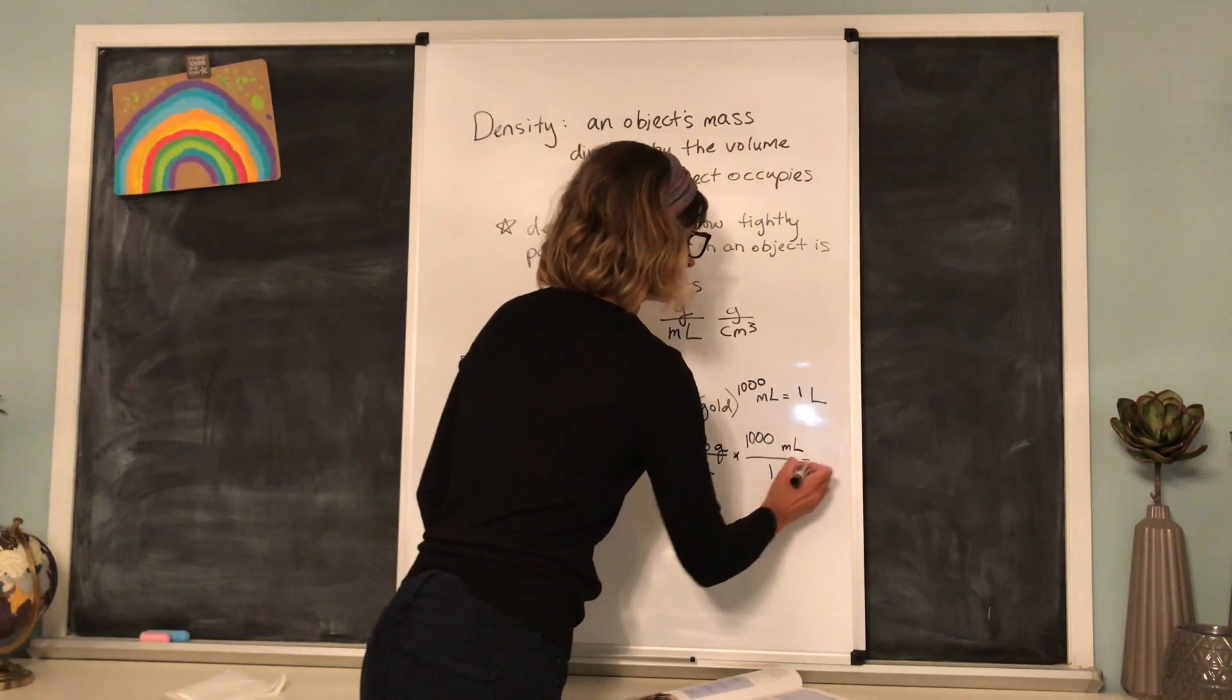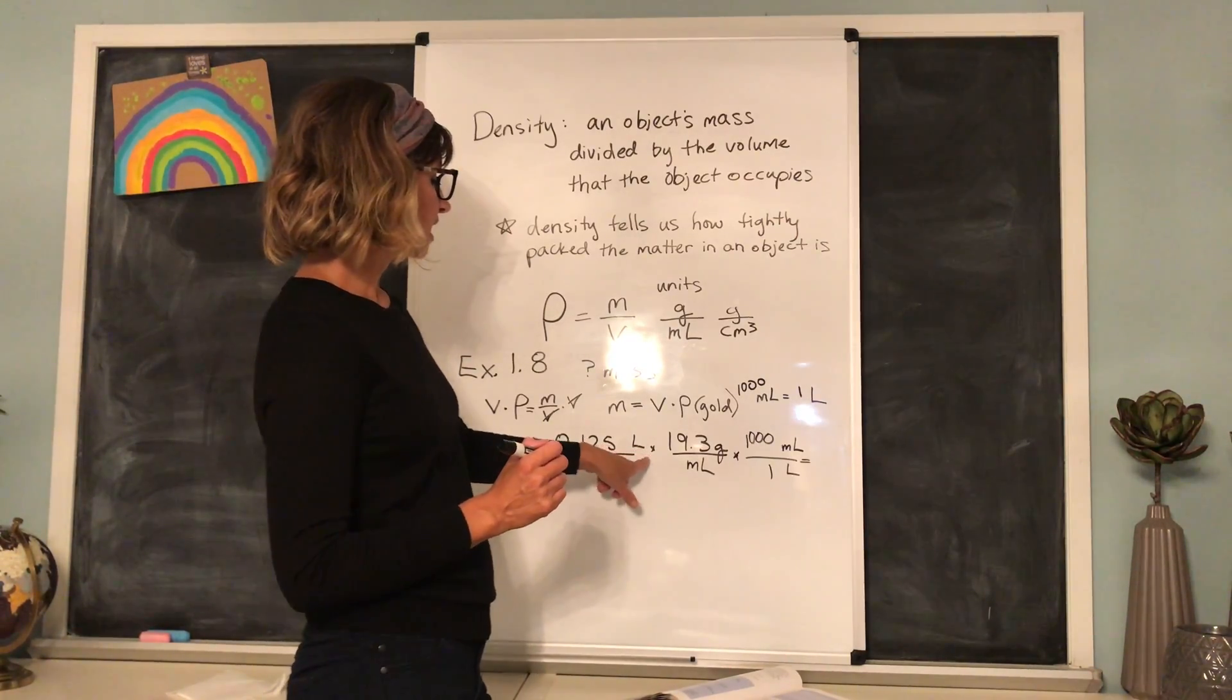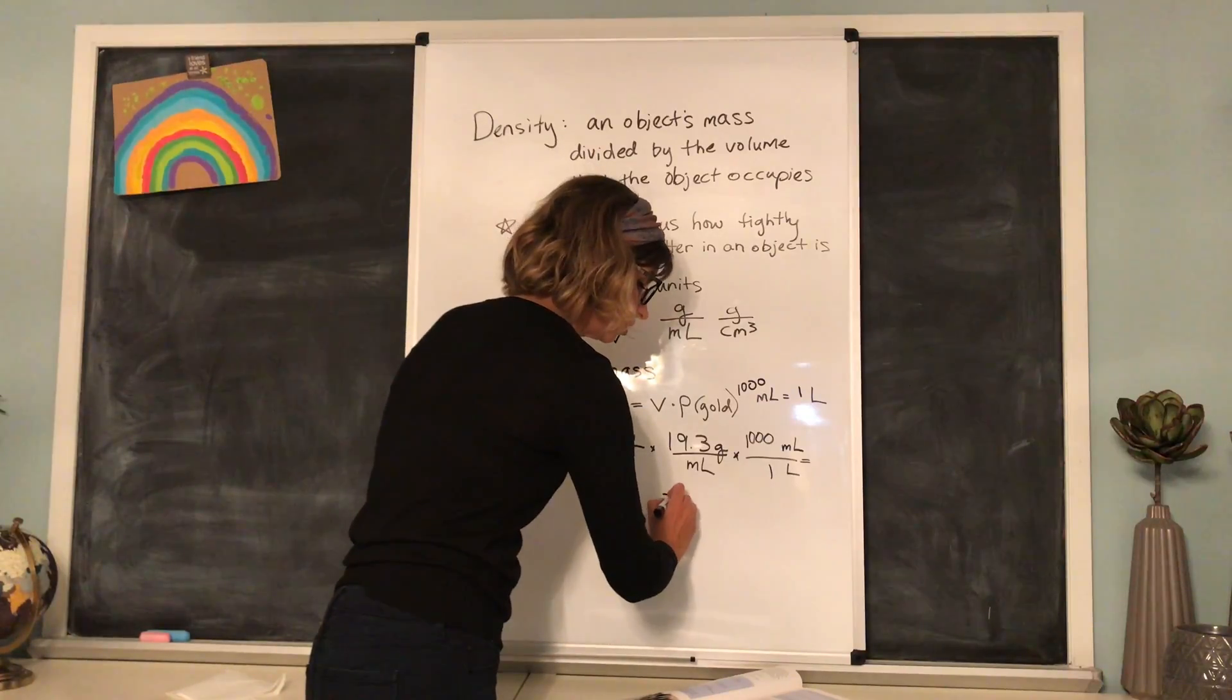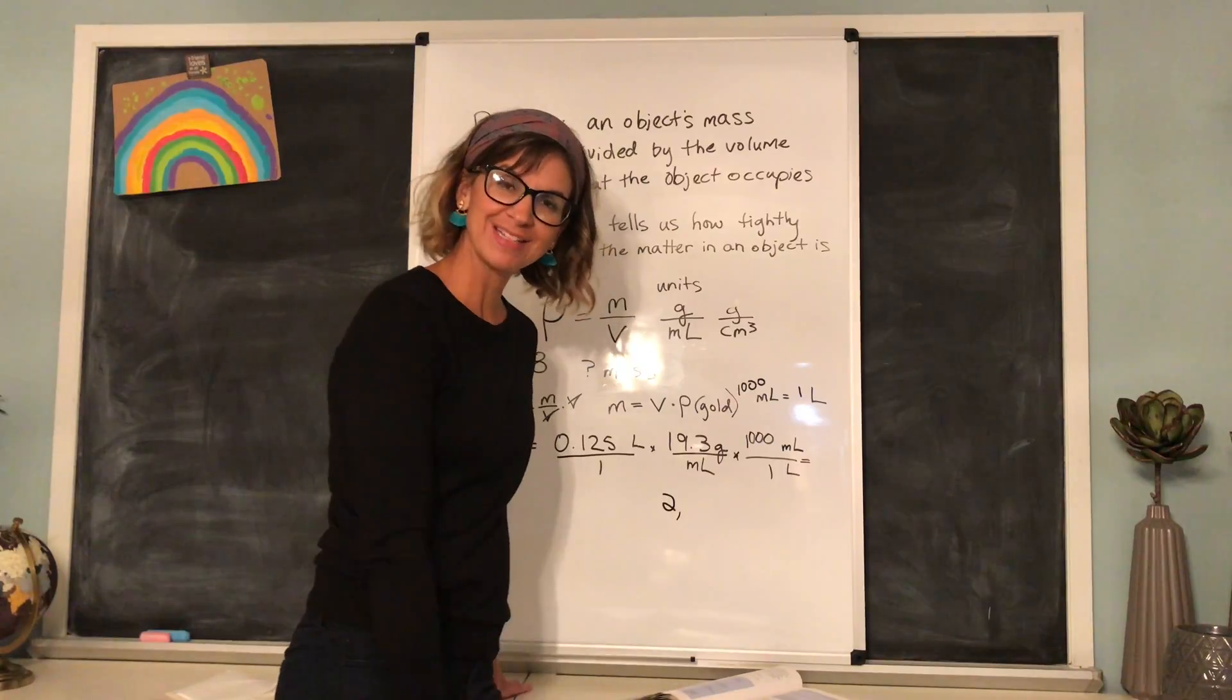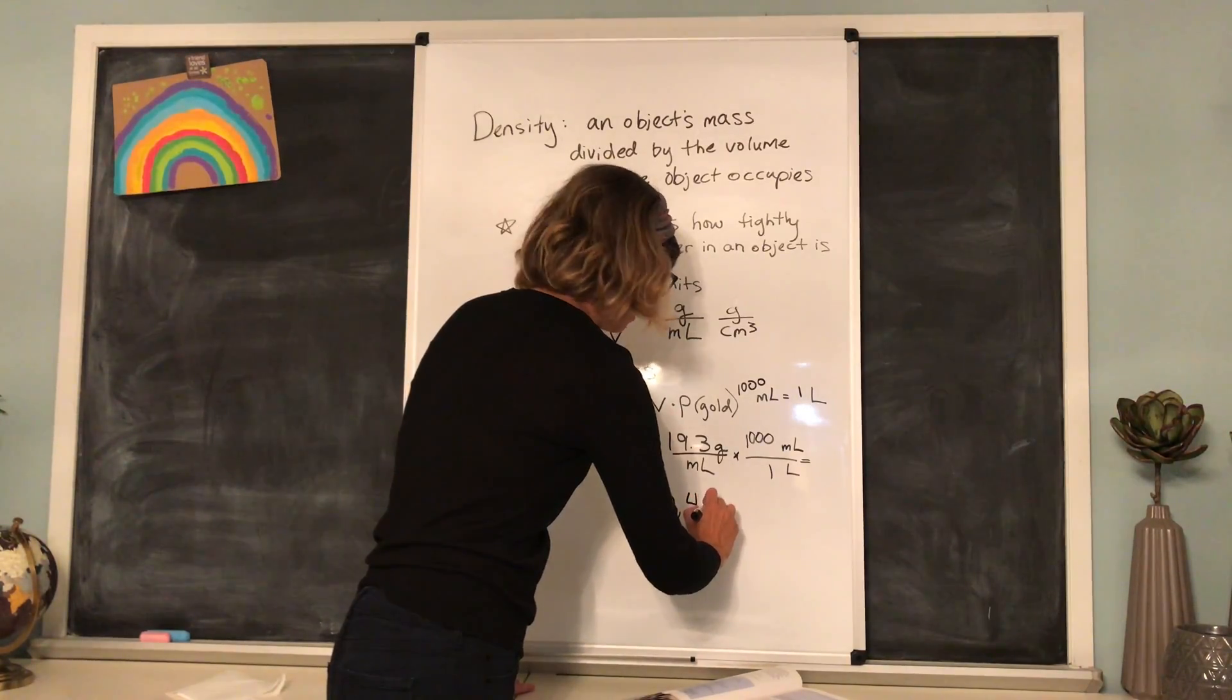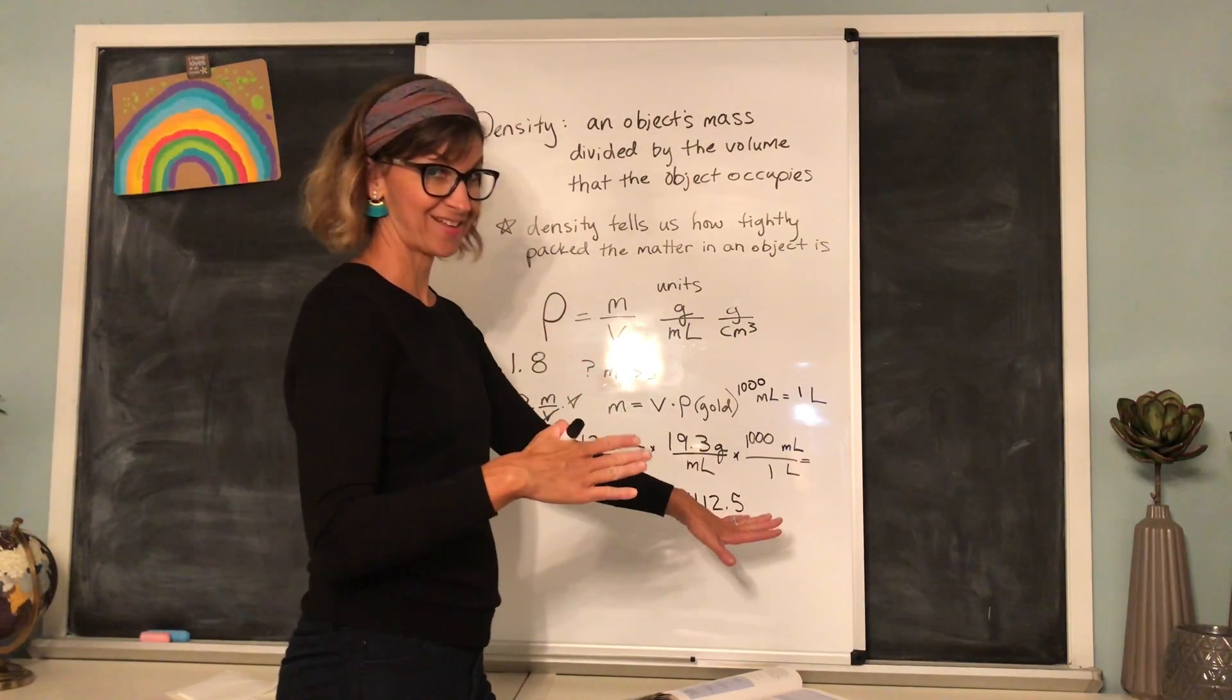And then we can just multiply and divide it out. So if I was going to put this into my calculator, I would say 0.125 times 19.3 times 1,000. And I would get the answer to, I'm just looking in the book for the corrected digits because I don't have my calculator next to me like you are supposed to. I hope that you have yours next to you. 2,412.5 was the number that came out of the book's calculator.